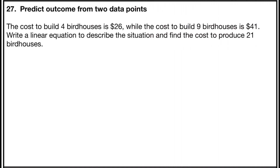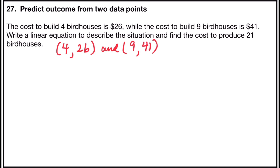Problem number 27 asks you to predict an outcome from two data points. The cost to build four birdhouses is $26, while the cost to build nine birdhouses is $41. Write a linear equation to describe the situation and find the cost to produce 21 birdhouses. The function isn't given, but we have two data points: (4, 26) and (9, 41).